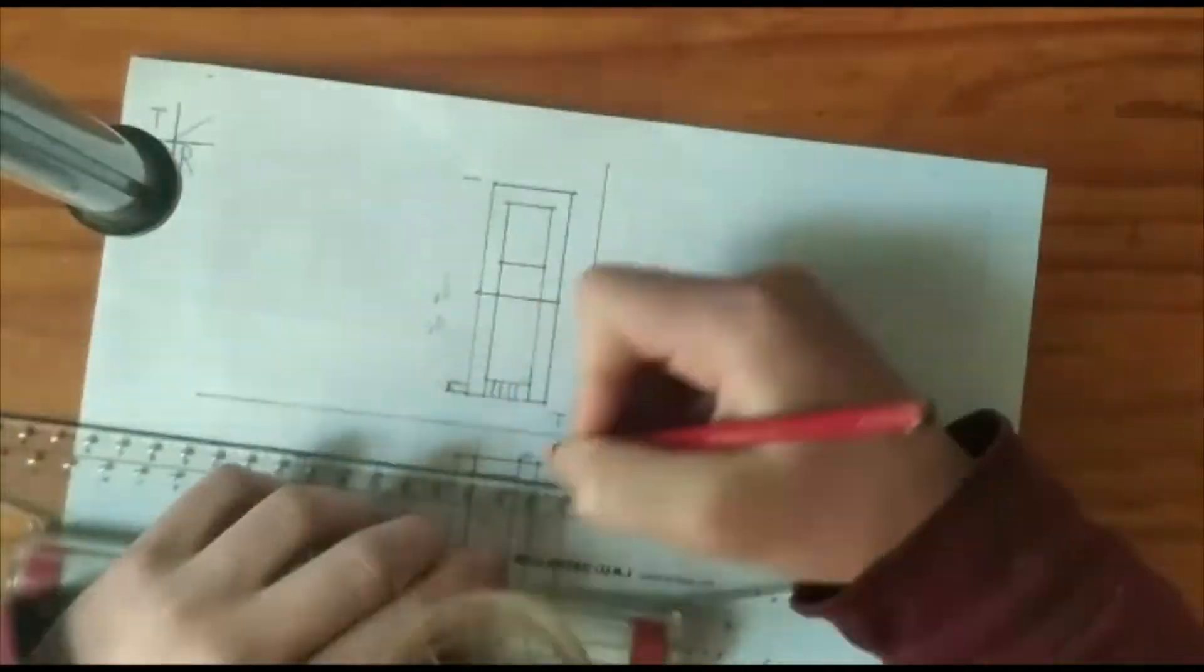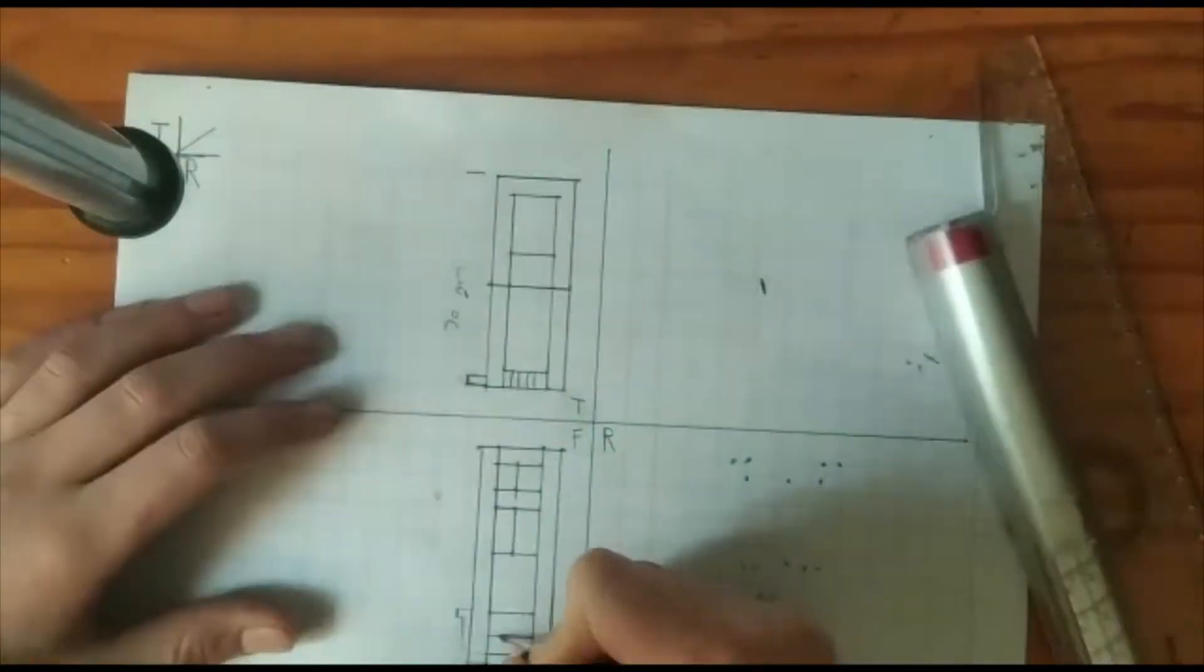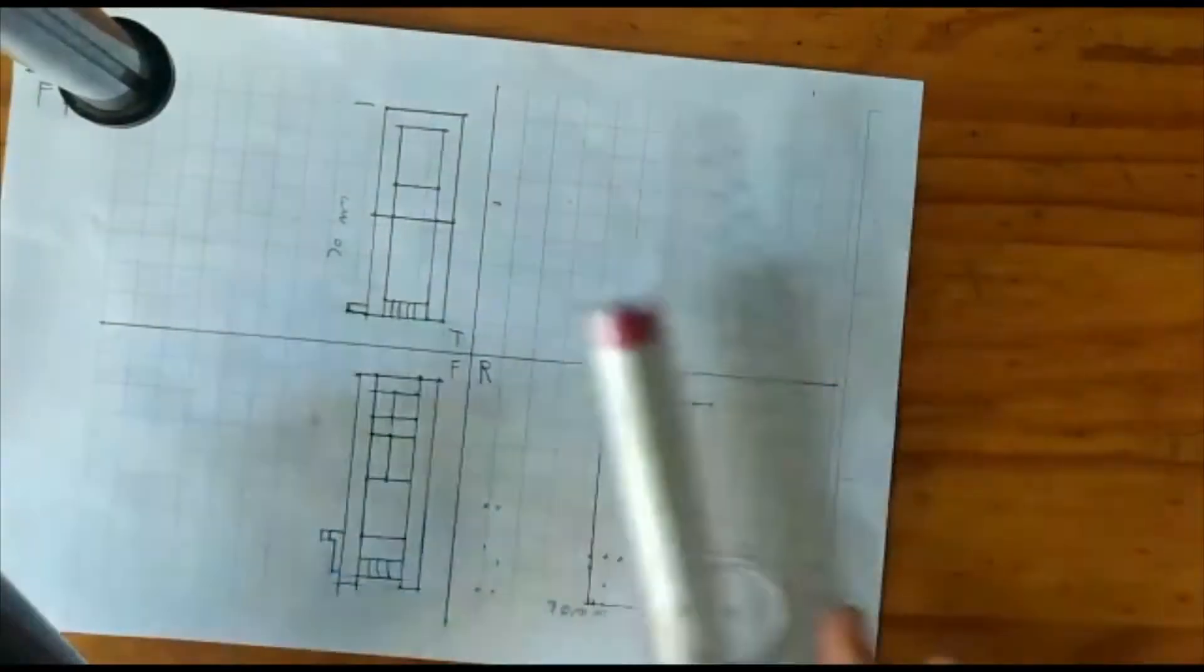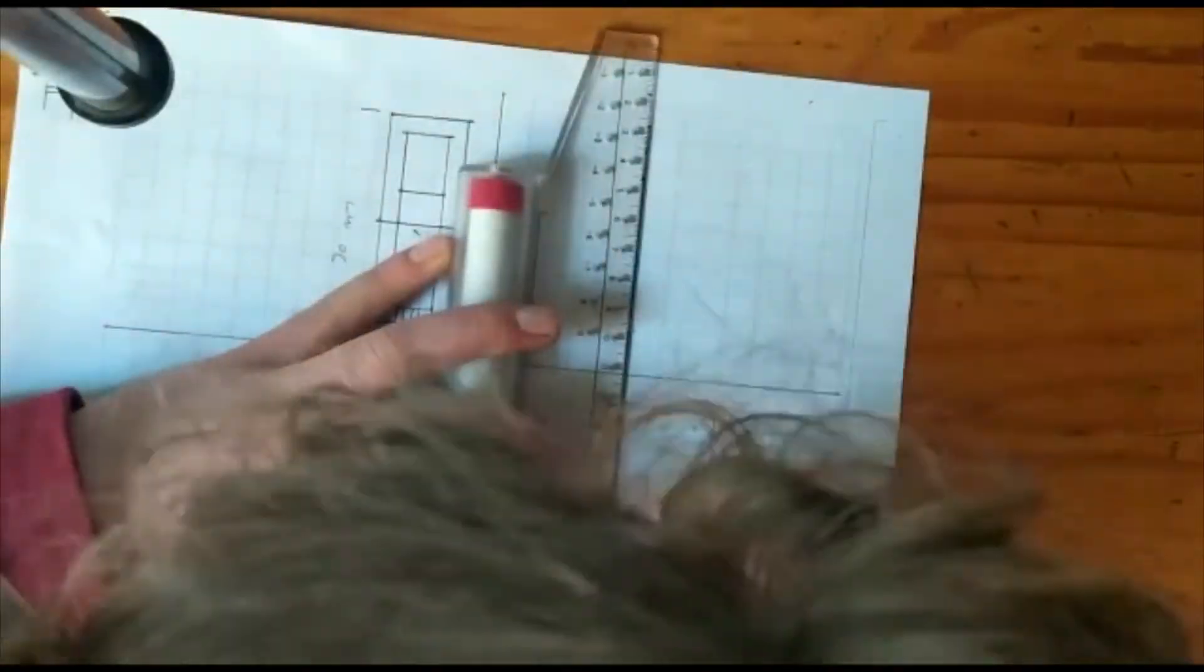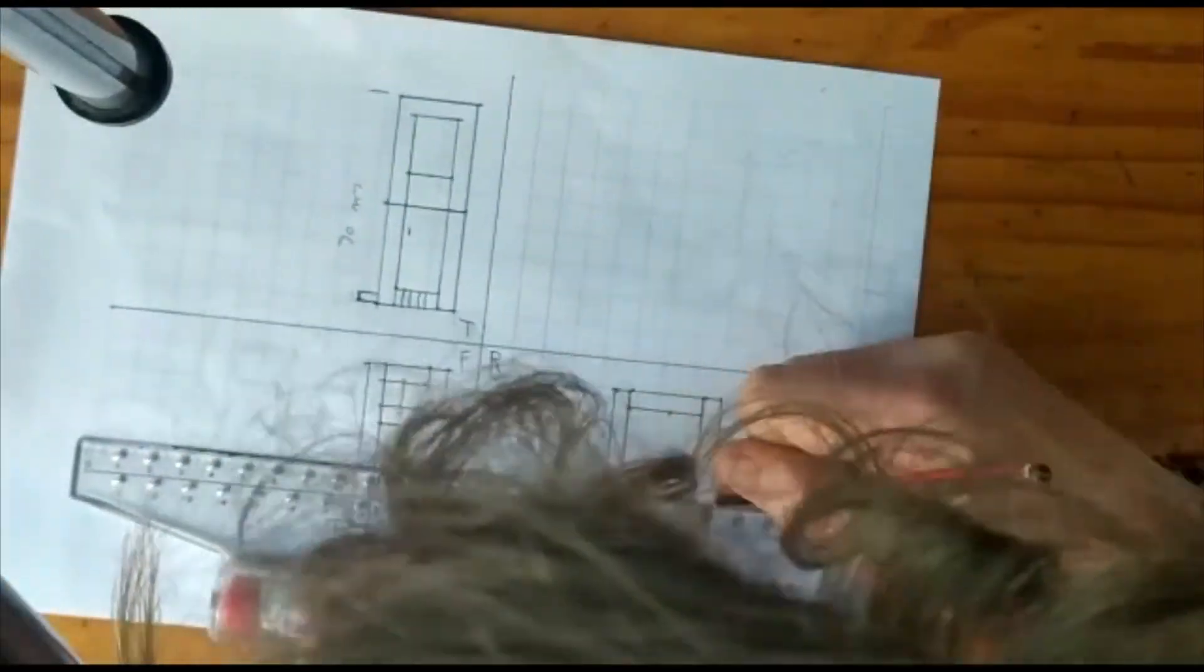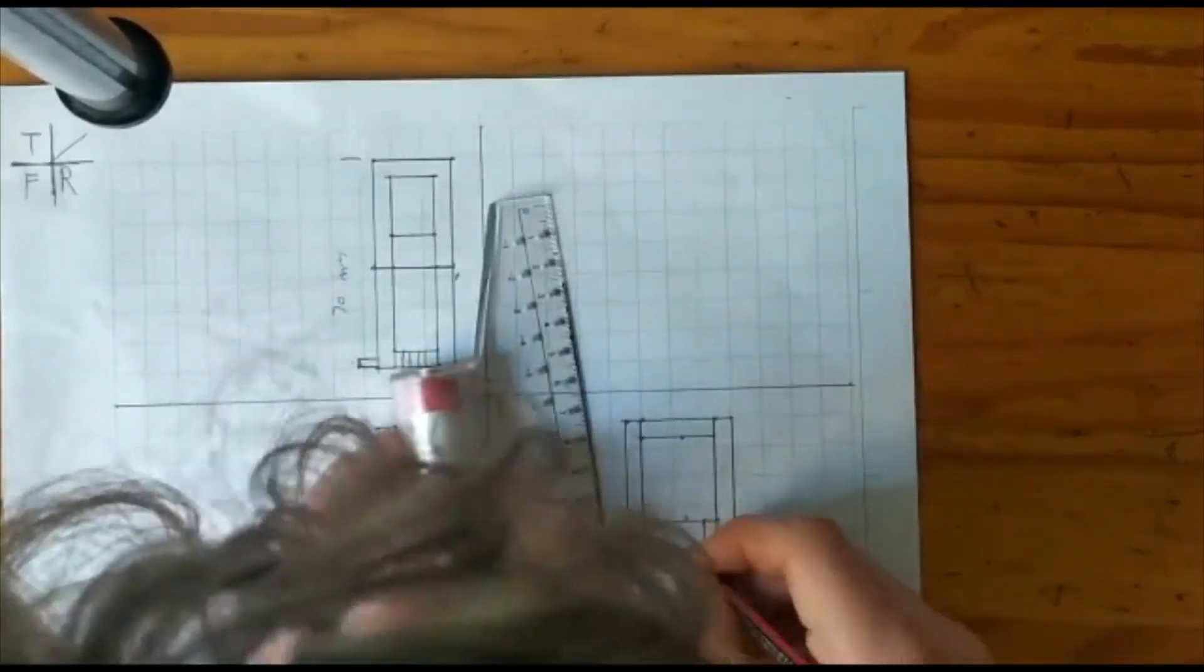An orthographic drawing represents a three-dimensional object using several two-dimensional views of the object. Third angle projection is where the 3D object is seen to be in the third quadrant. It is positioned below and behind the viewing planes.